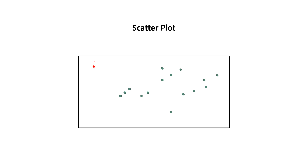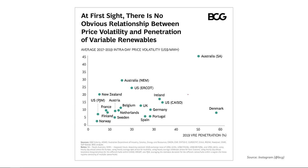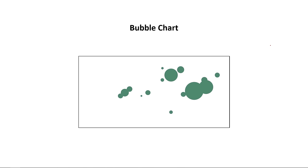Here's a pretty good example from BCG, showing price volatility versus penetration of variable renewables. What it's trying to communicate is that they don't believe there's much correlation at all. The other powerful thing about scatterplots is you can add additional variables — for example, changing the size of each dot to represent something else gives you a bubble chart. You could also change the color or symbols, but I'd really caution against overloading the chart. The temptation is to introduce all these extra variables, which just makes it more confusing. Focus on your main message.